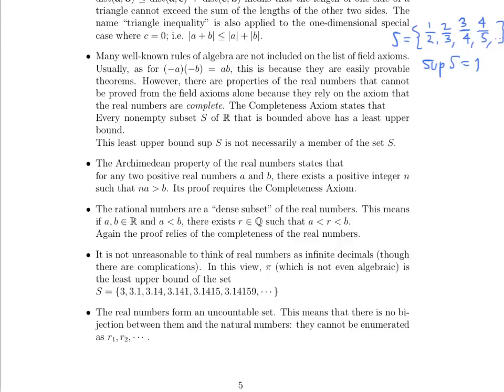Another thing to think about is that it's not unreasonable to think of the real numbers as infinite decimals, though there are some complications. In this view, pi, which is not even algebraic because it needs to be a solution to that equation that we wrote on the previous page where there are integers involved, is the least upper bound of the following set. So that's another example of a set where the least upper bound is not a member of the actual set.